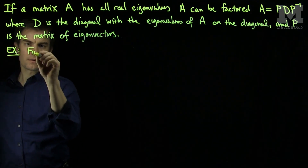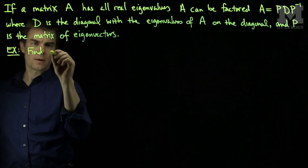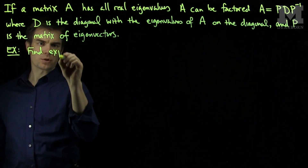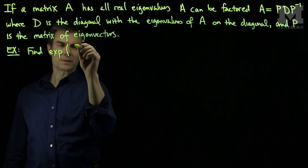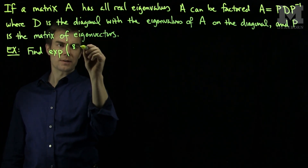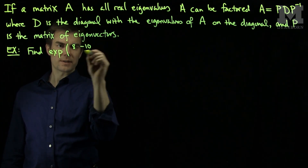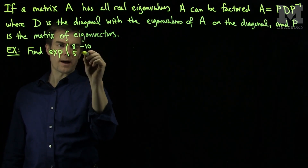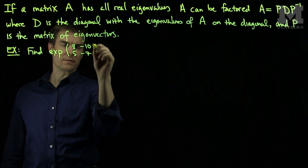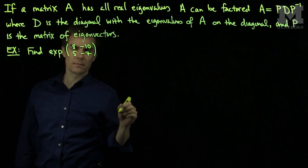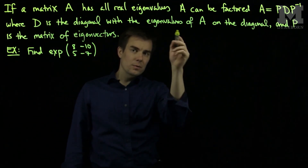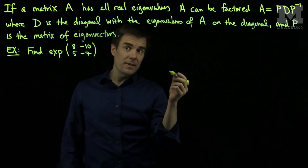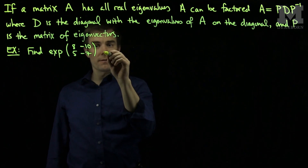Let's find the exponential of the matrix [8, -10; 5, -7]. What I'll do is use this idea and find the eigenvalues of A first.